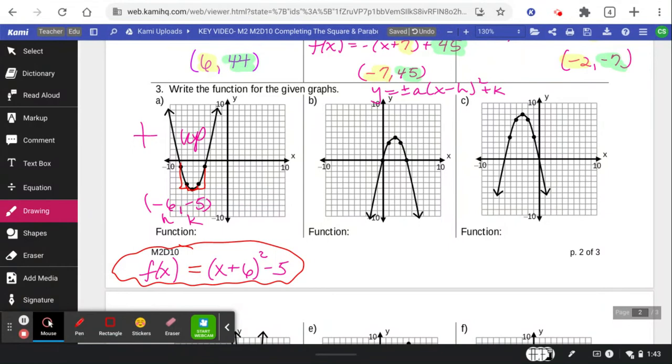Okay, look at this next one. 1, 2. 2, up 1, 2, 3, 4. This vertex, this hk, is at 2, 4. So we plug it in. x minus h squared plus k. See how I'm just putting that 2, 4 straight into the function?